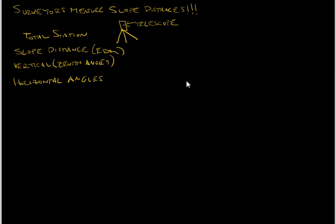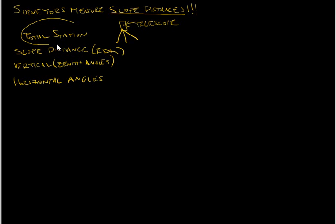Hello again. This is the second video on the introduction to surveying. I made a mistake in the last video — I said surveyors measure horizontal distances, but in fact surveyors measure slope distances. These slope distances are converted to horizontal distances via the total station.